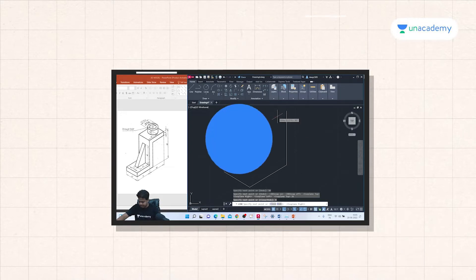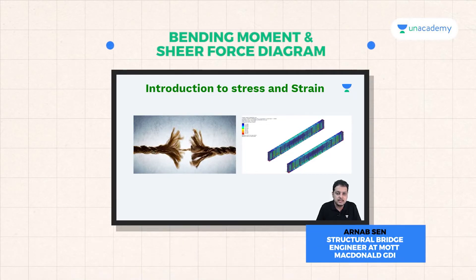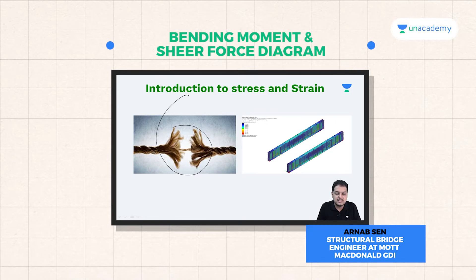Introduction to stress and strain. As you can see on the left hand side of the screen, I have kept a picture of a rope which is getting separated — one part of the rope is getting separated from the other. What caused the separation? It is basically stress experienced by the rope on account of some forces. These are the things we are going to learn in this first chapter.